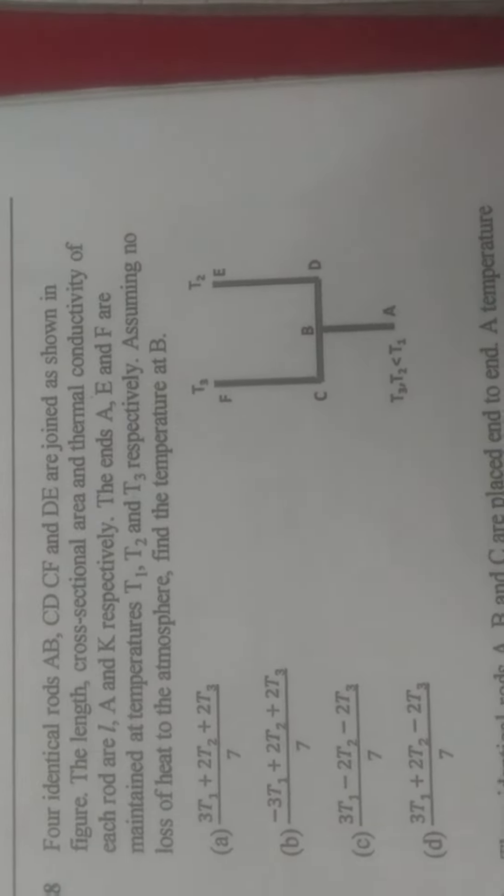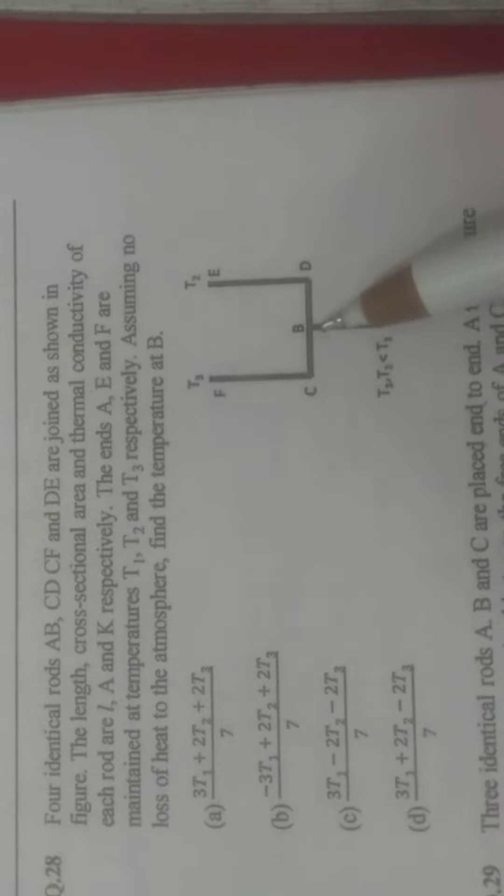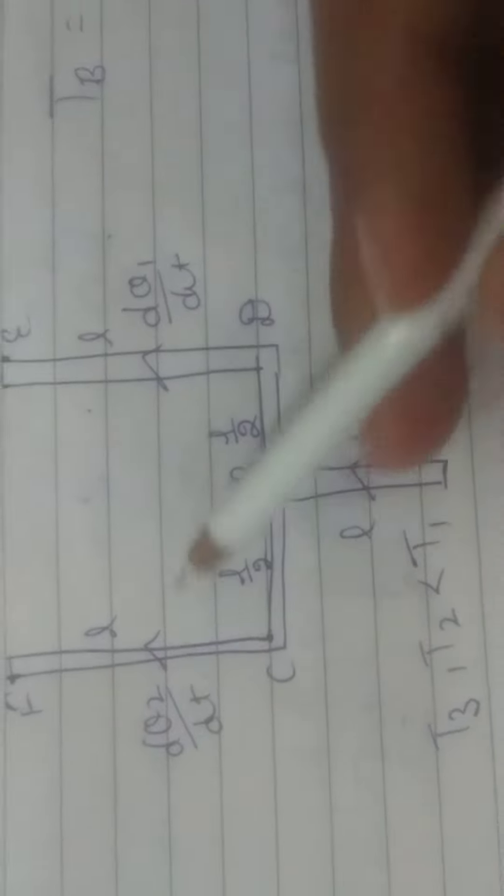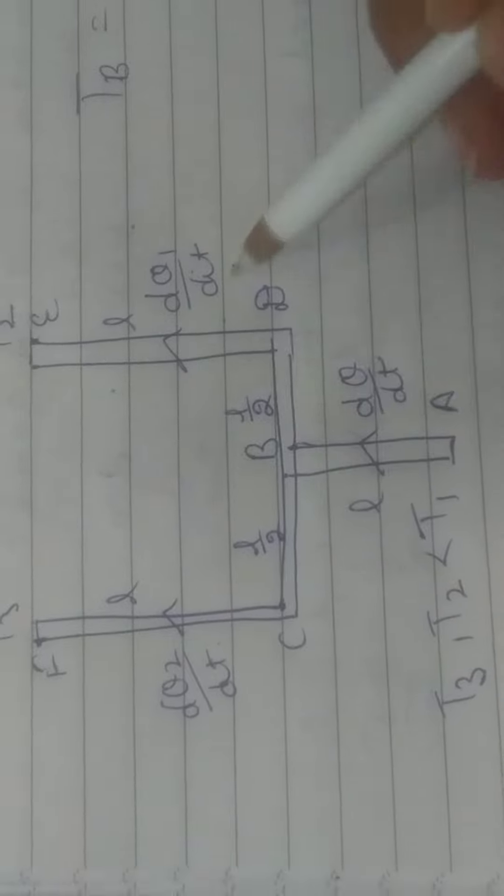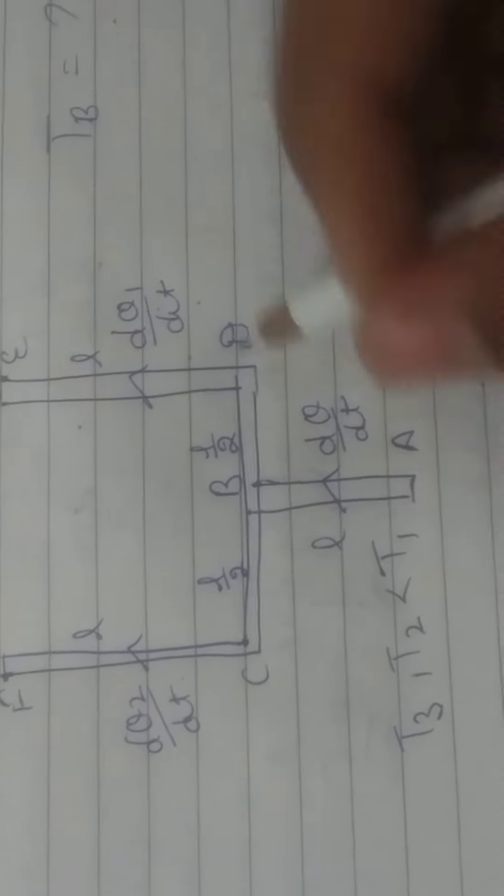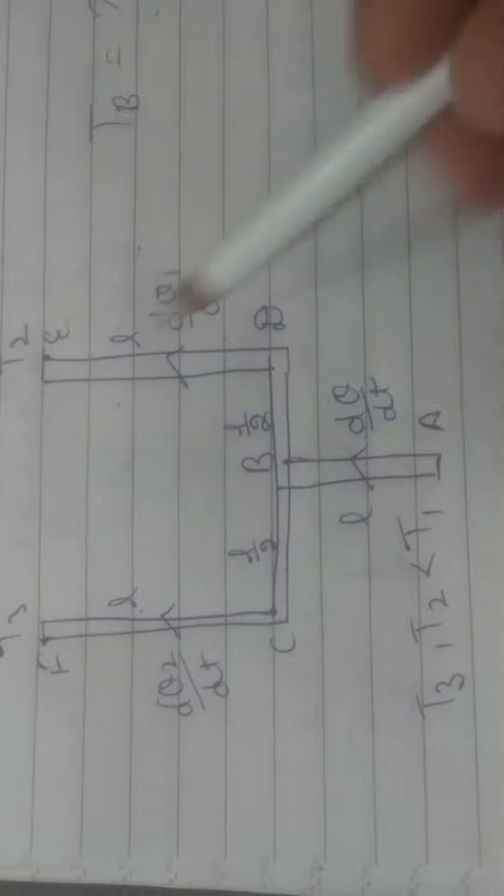Temperature at B is what we need to find out. So Q1 heat has passed, these two parts are divided: DQ1 by DT, DQ2 by DT. The lengths are L by 2, L by 2, L, L, L.